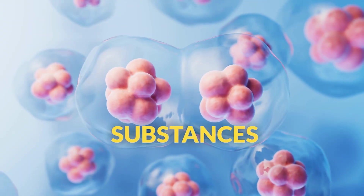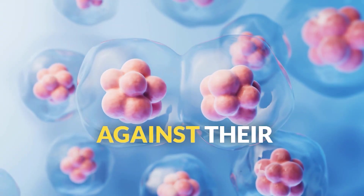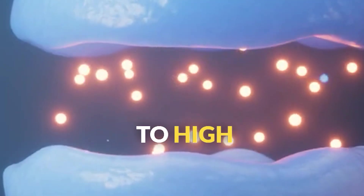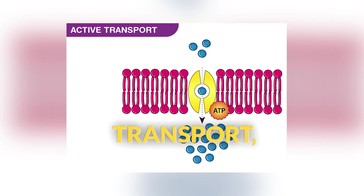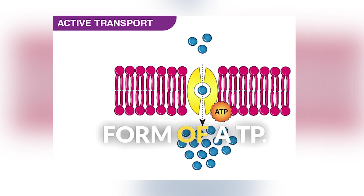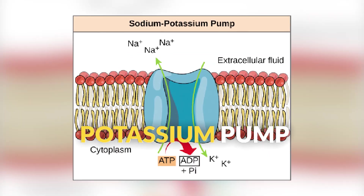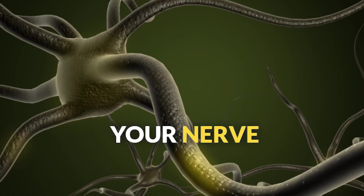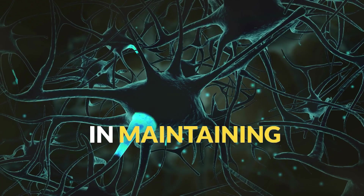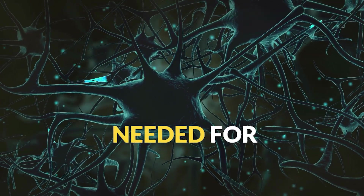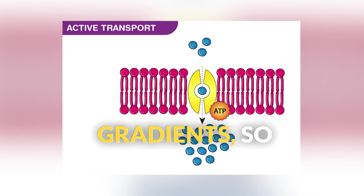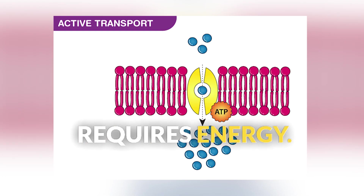Sometimes cells need to move substances against their concentration gradient, from low concentration to high concentration. This is active transport, and it requires energy, usually in the form of ATP. The sodium-potassium pump is a perfect example. Your nerve cells pump sodium out and potassium in, maintaining the electrical conditions needed for nerve signals. This happens against both concentration gradients, so it definitely requires energy.